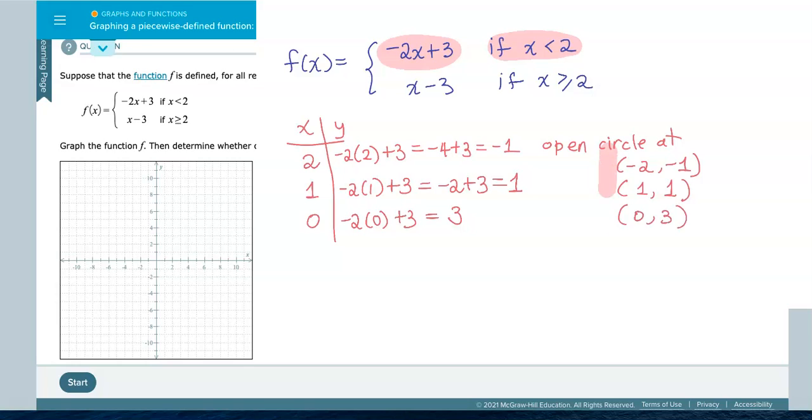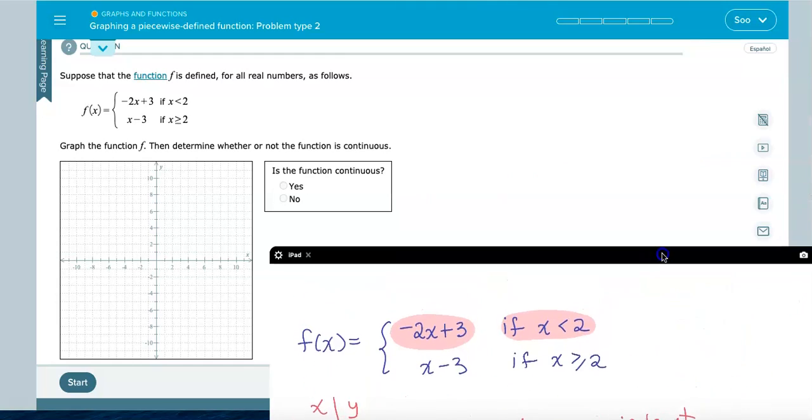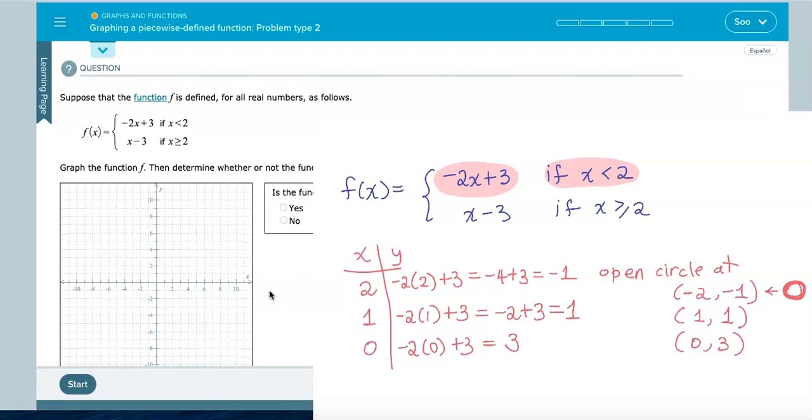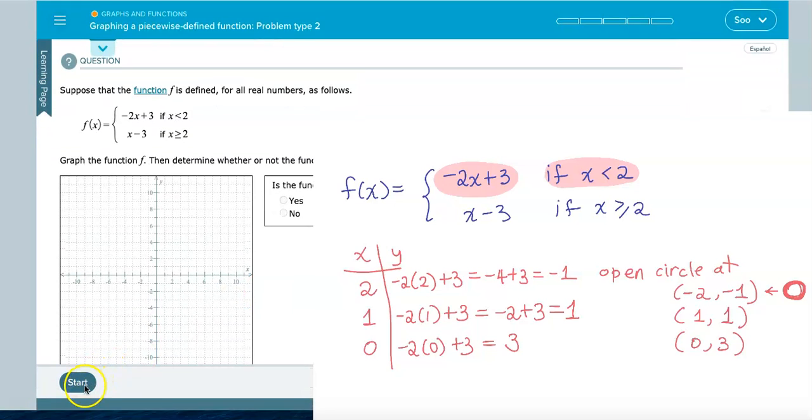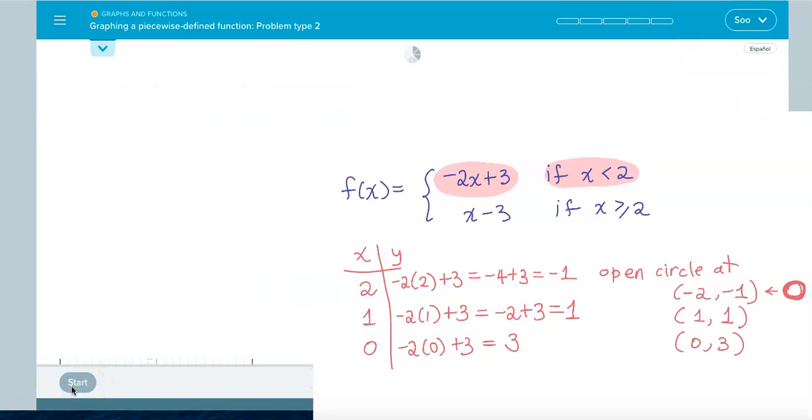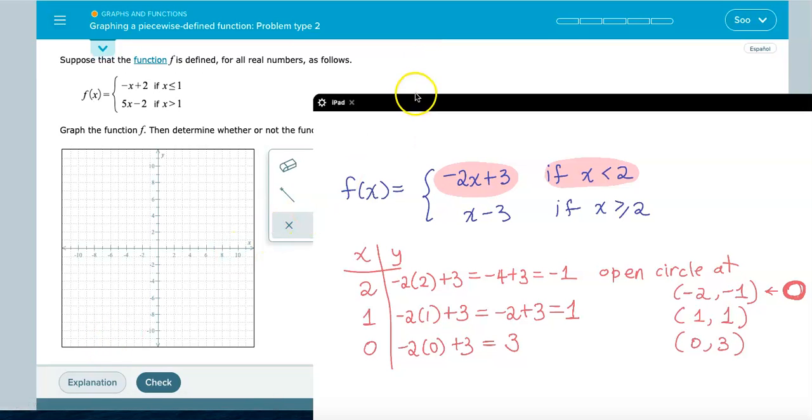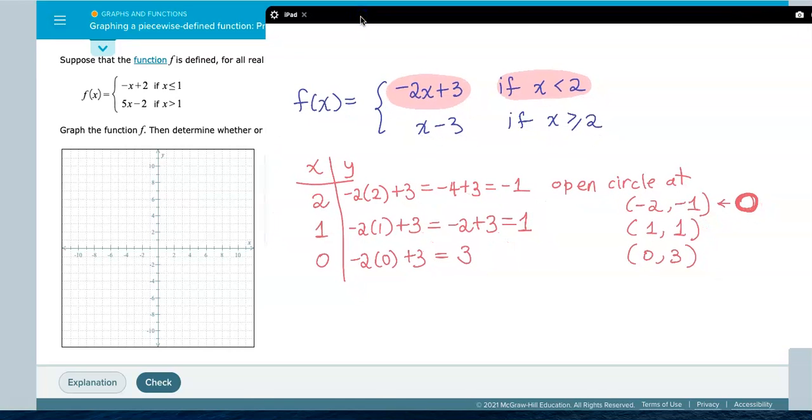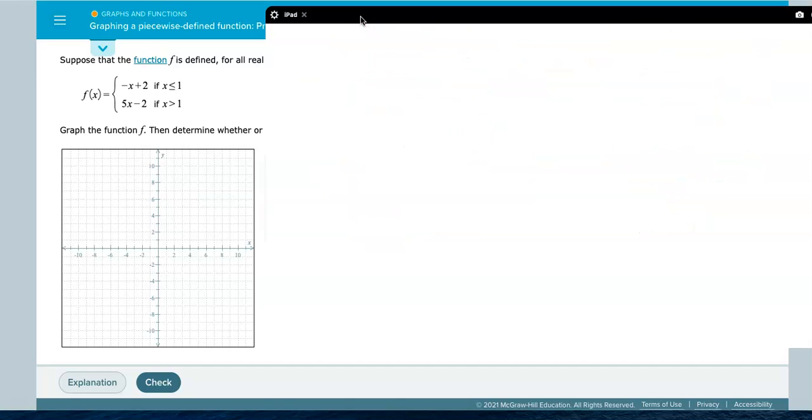So let me go ahead and graph the first piece by plotting these three points, making sure that I plot an open circle at negative 2, negative 1. Where are the tools? I was looking at an example. I'm going to have to click on start and really get the real problem again. My method may take longer time, but that's what I do.